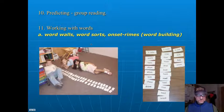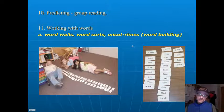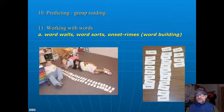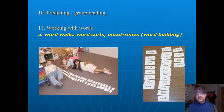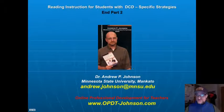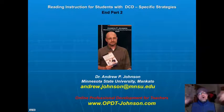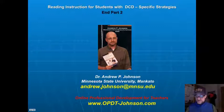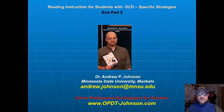Working with words: word walls, word sorts, onset rhyme, word building. And with sight words — the most frequent words, the Dolch list, whatever you use — the hundred most frequent words like 'a,' 'the,' 'in,' 'but.' It's okay to have flash cards and to use games like Old Maid, Go Fish, or Concentration using these most frequent words. Not just one strategy, but all of these strategies are appropriate for students with developmental cognitive disabilities — and by the way, they are appropriate for all children.